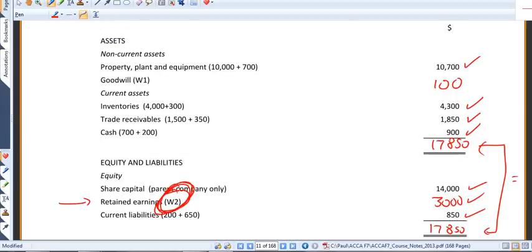cross-referenced to working two. So there it is. It balances. And we've introduced two new ideas, goodwill and group retained earnings.